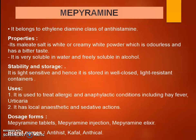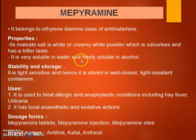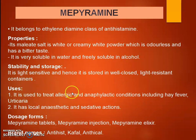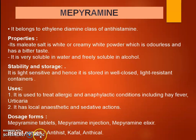Next drug is Mepyramine. It belongs to the ethylenediamine class of antihistamines. Properties: its maleate salt is a white or creamy-white powder, odorless and with a bitter taste; it is very soluble in water and freely soluble in alcohol. Storage: it is light-sensitive and stored in a closed container. Uses: it is used to treat allergic and anaphylactic conditions including hay fever and urticaria; it also has local anesthetic and sedative action. Dosage forms: mepyramine tablet, injection, and elixir. Brand names: Antihist, Caffal, and Antithical.